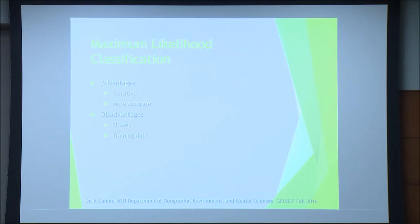I decided to choose the maximum likelihood classification system. The reason is because it is sensitive to both variance and covariance in the training data; it is more accurate than the parallelepiped and minimum distance to means methods, though it is slower computationally. The training data needs to be normally distributed, so I worked very hard to make my training end members as rigorous as possible. Google Earth really helped with that — the imagery was in many respects of a finer resolution than the Landsat, so that's something to be aware of.